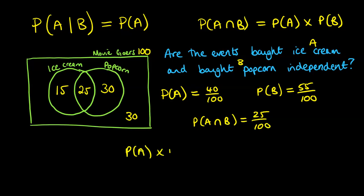Now, probability of A times probability of B comes to 11 over 50. This is not equal to 25 over 100. Therefore, these two events are not independent.